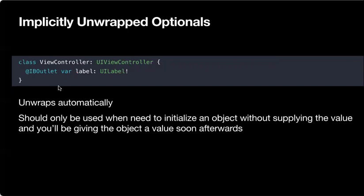The last thing: you can specify variables as implicitly unwrapped optionals using an exclamation mark instead of a question mark. You can use this only when the variable will be initialized right away and given a value immediately after definition. This is common with IBOutlets — when the view controller loads, all outlets will have values, so you don't need to worry about them being nil.